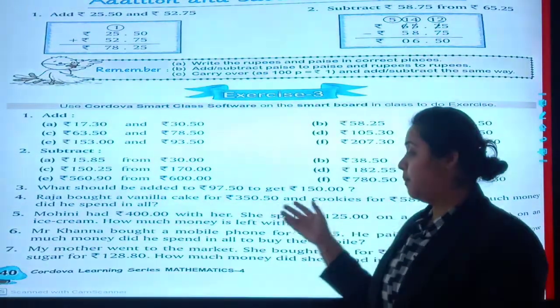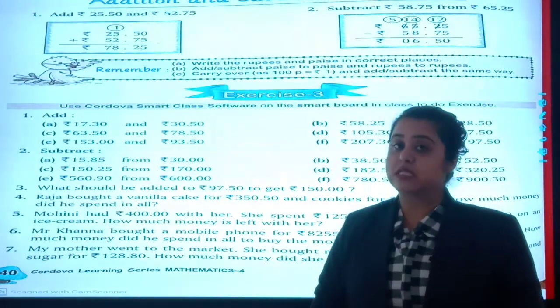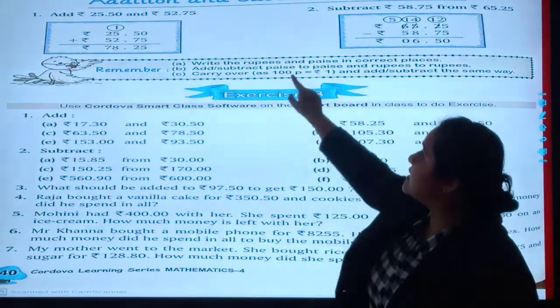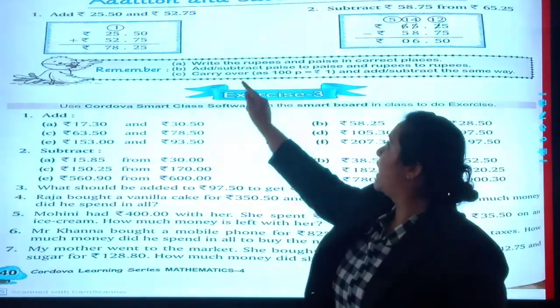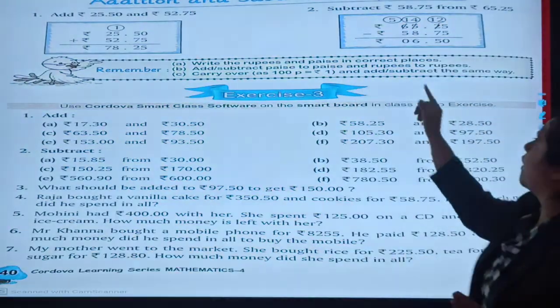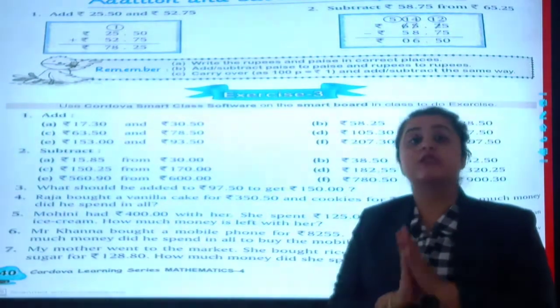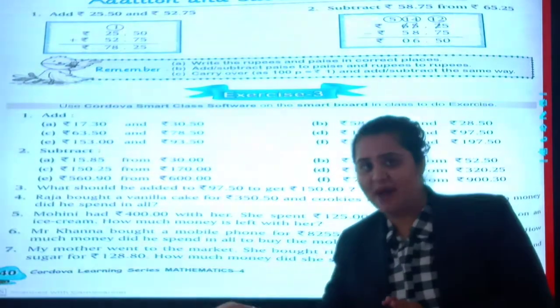So on page number 140 of your textbook you will be able to see your exercise. First of all, let's discuss the important points. Remember, write rupees to paise in the correct place. The main thing is rupees should be written before decimal and paise after decimal.